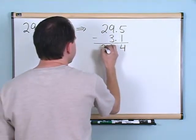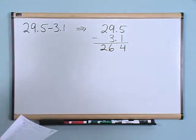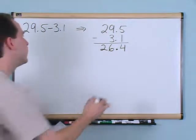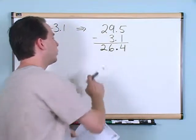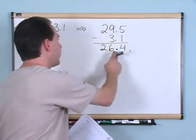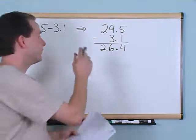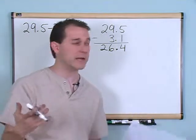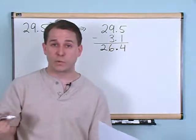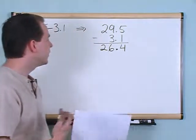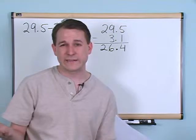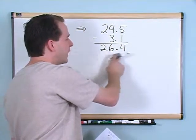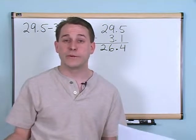Start in the right column. 5 minus 1 gives me 4. 9 minus 3 gives you 6. And 2 minus 0 gives you 2. Just like before, take the decimal point and drag it down, putting it in between. So 29.5 minus 3.1 gives you 26.4 — just take that decimal point and drag it down.